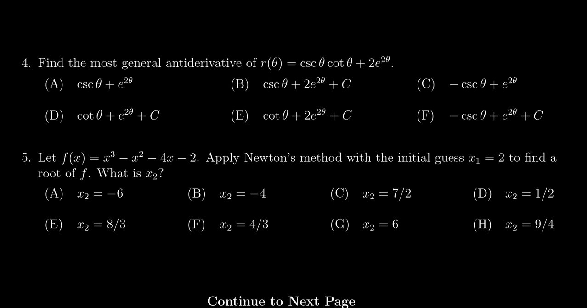So if we look at this piece by piece, since we have a sum of two functions, we have to find their antiderivatives individually. So let's first look at cosecant theta times cotangent theta.